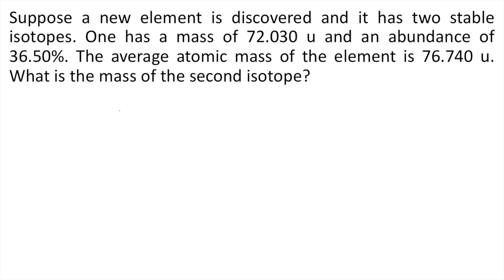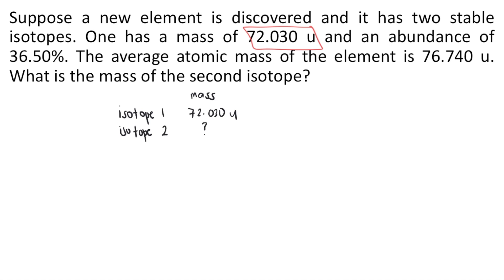According to the problem, there are two isotopes, so let's call them isotope 1 and isotope 2. We are given the mass: the mass of isotope 1 is 72.030U. The mass of isotope 2 is not given — it's the missing value — so let's put a question mark. Moving on to percent abundance, isotope 1 is 36.50%.